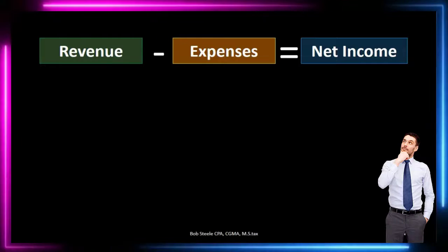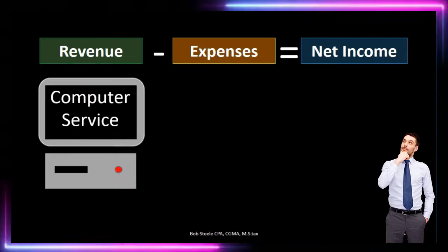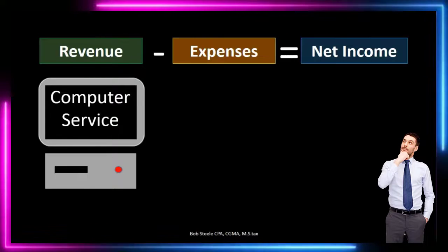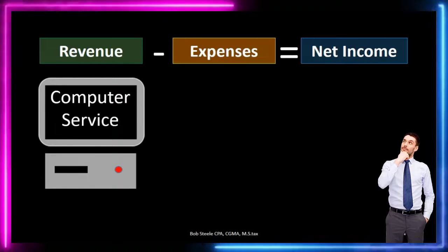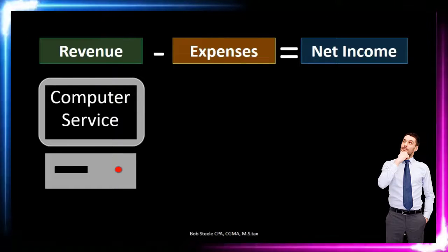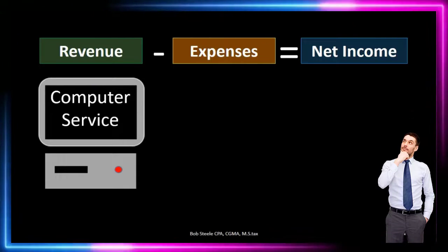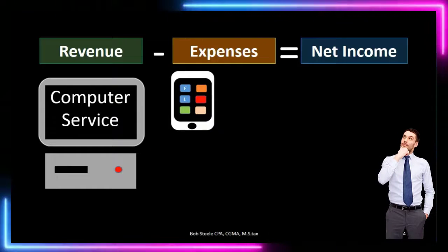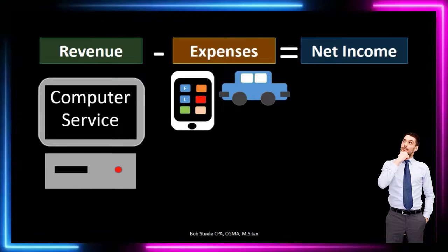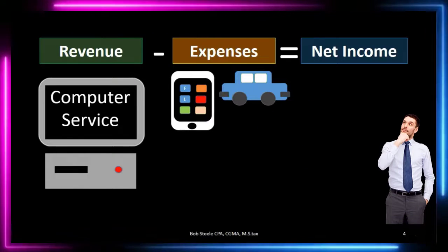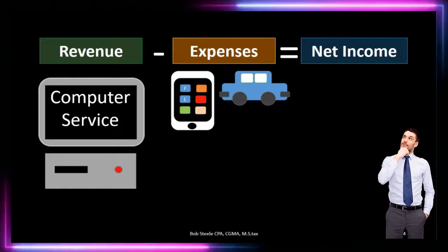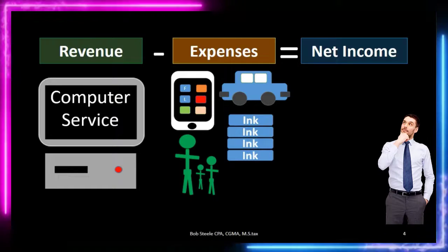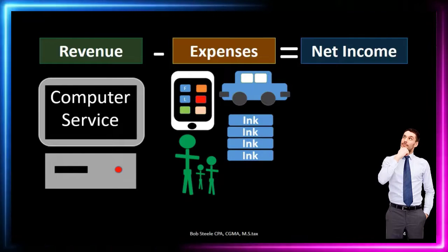When we think about the revenue side of things, there are usually fewer revenue accounts. Hopefully revenue will be greater in dollar amounts, but we usually specialize, meaning we're not doing a lot of different things. In this case, we're just going to be doing computer service — that's the only type of revenue that we have. As opposed to expenses, which is everything we consume in order to generate that revenue. For example, the phone could be an expense, the auto expense — not the auto itself, which is an asset, but the gas and the maintenance would be an expense.